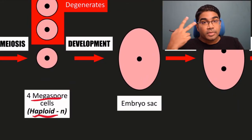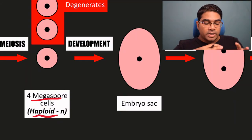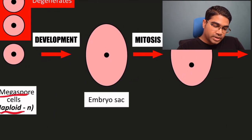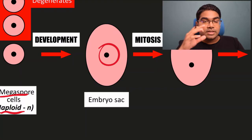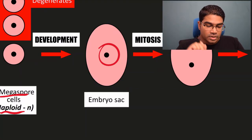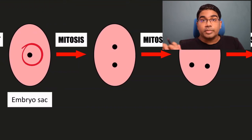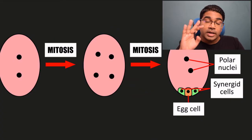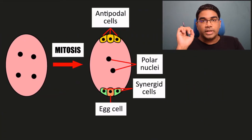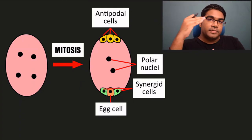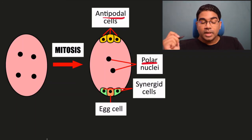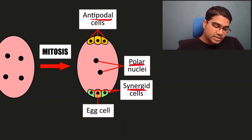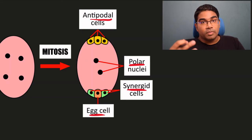The second process is the same — development: the megaspore cell develops into the embryo sac. The embryo sac currently only has one nucleus, which is going to undergo the third process, mitosis. But this is a bit special because in the embryo sac, mitosis happens three times. The first time two nuclei are produced; the second time it doubles to four nuclei; and the third time it doubles again to eight nuclei. These eight nuclei are distributed differently: three are at the top inside antipodal cells, two in the middle forming the polar nuclei, and three at the bottom — two inside synergid cells and one in the actual egg cell, the ovum, which is the female gamete.